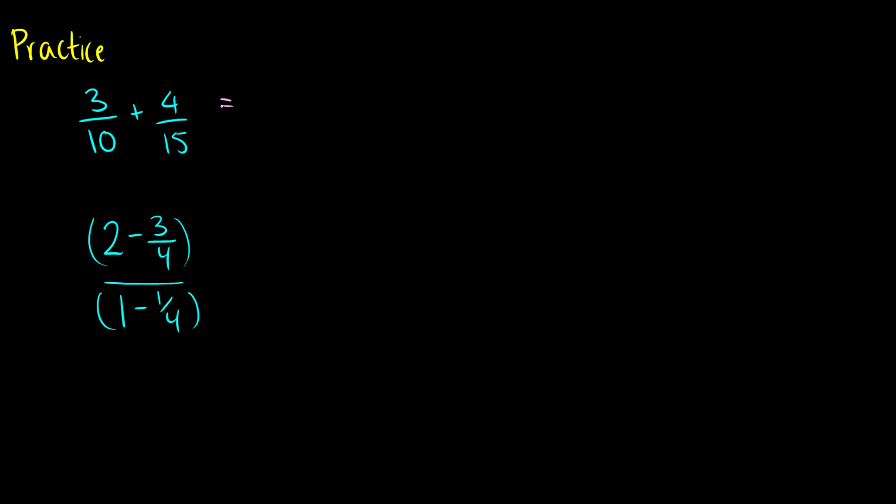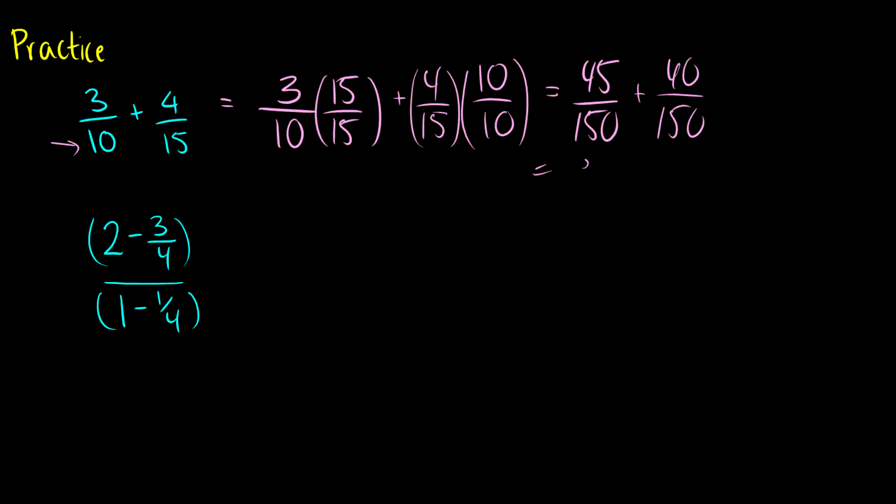Here's what we can do. We can do the cross multiplication trick. So this 3 over 10 is going to be multiplied by the denominator of the second term. So this will be 15 over 15. Then we're going to add 4 over 15 times the denominator in this term is 10. So this is going to be 10 over 10. So we're going to get 3 times 15, which is 45 over 10 times 15, which is 150, plus 4 times 10 is 40, over 15 times 10 is 150. Now we can add these two together to get 85 over 150. And if you want, you can simplify it. And this will end up as 17 over 30.